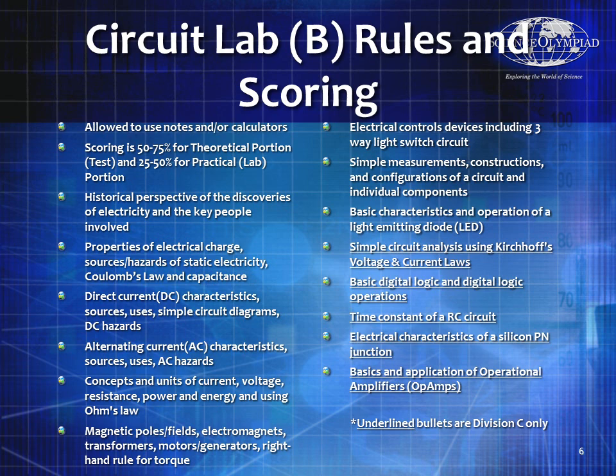You'll need to know history at a very high level, properties of electrical charge, DC or direct current characteristics, AC characteristics, concepts and units of current, voltage, and resistance, information about magnetic poles and fields, how light switches work, how to do simple measurements, and basic characteristics and operation of LEDs. Simple circuit analysis using Kirchhoff's voltage laws is for division C only, along with basic digital logic, RC circuits, electrical characteristics of a silicon pn junction, and the basics and application of operational amplifiers.